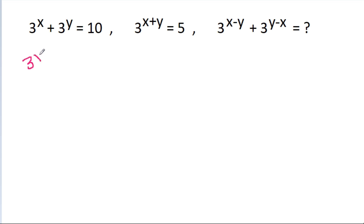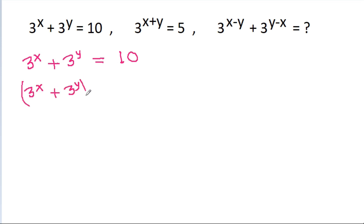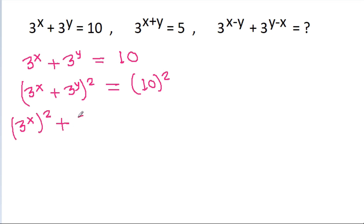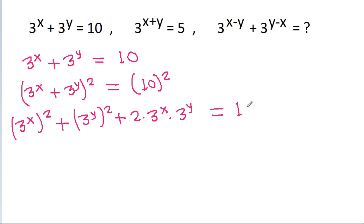We have 3 power x plus 3 power y is equal to 10. If we square both sides, then (3 power x plus 3 power y) squared is equal to 10 squared. This gives us 3 power x squared plus 3 power y squared plus 2 into 3 power x into 3 power y, equal to 100.